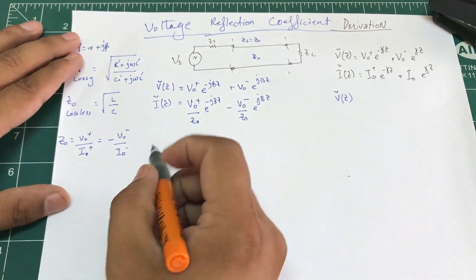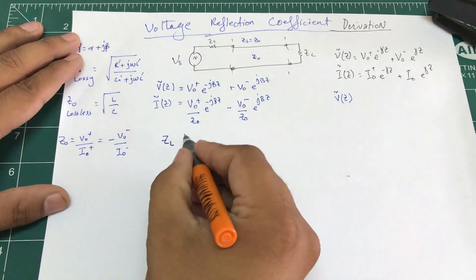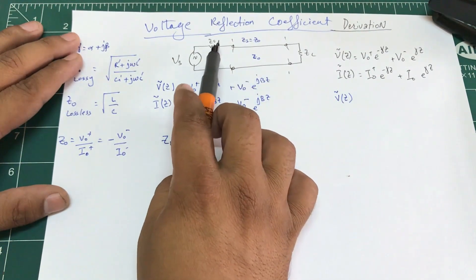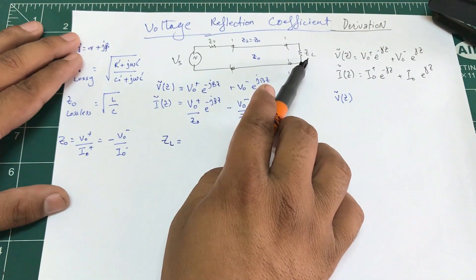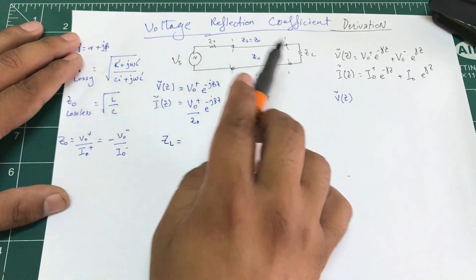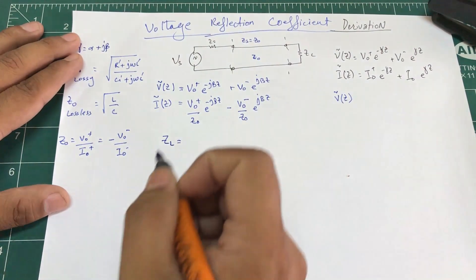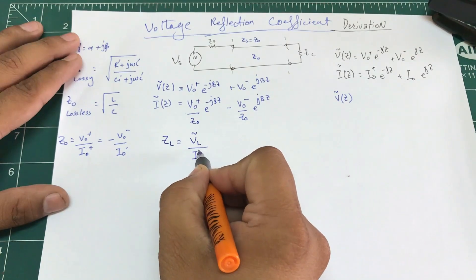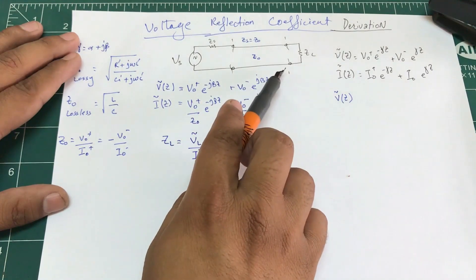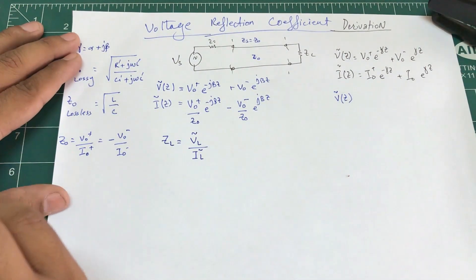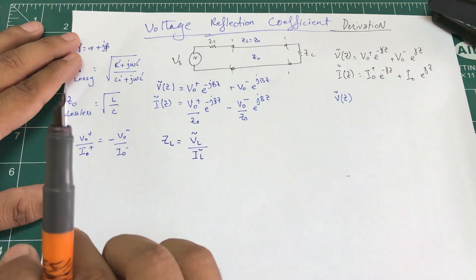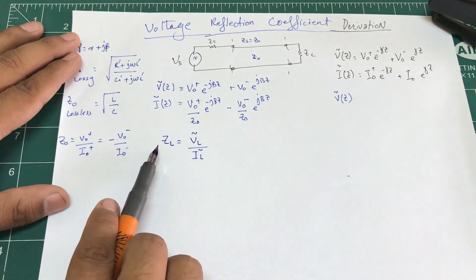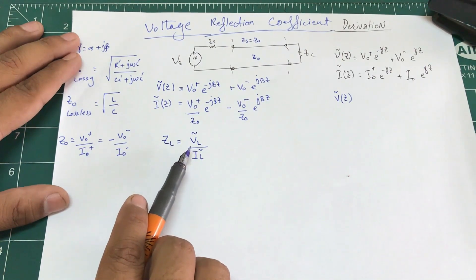Now I'm trying to calculate my ZL, the load impedance. We're assuming ZS equals Z0, so they have no mismatch effect. The only change will happen with respect to ZL. If there is a mismatch with ZL, we want to find the resulting voltage reflection coefficient. So to find ZL, I need VL divided by IL.